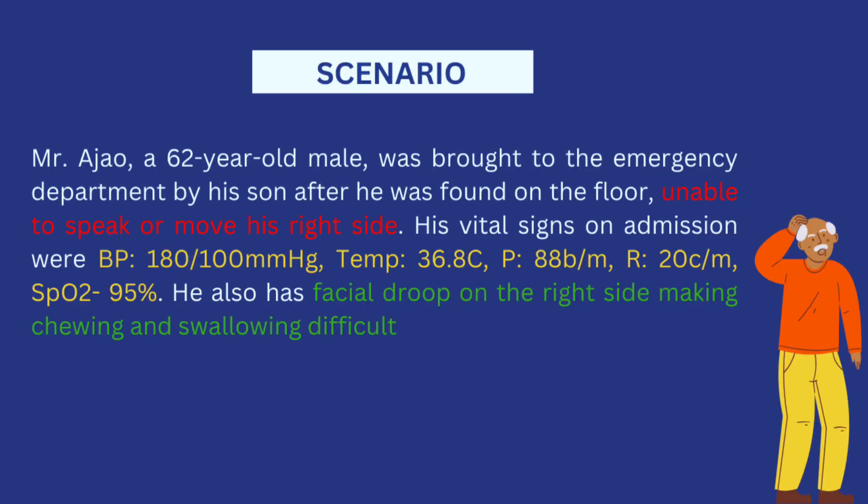Here's the scenario we'll be working with. Mr. Ajao, a 62-year-old male, was brought into the emergency department by his son after he was found on the floor, unable to speak or move his right side. His vital signs on admission were blood pressure 180/100 mmHg, temperature 36.8°C, pulse 88 beats per minute, respiration 20 cycles per minute, SpO2 95%. He also has facial droop on the right side making chewing and swallowing difficult. This scenario is made up, and I highlighted some parts that will give us pointers to probable nursing diagnoses.